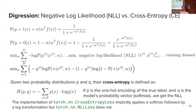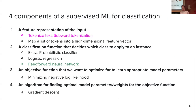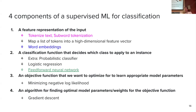This brings us to the end of feed-forward neural networks. We are still talking about supervised machine learning for text classification, learning more about each of four components. Last time we covered feed-forward neural networks as another classification function. Today we are going to enhance what we know about feature representation of the input — something better than the feature vectors you are implementing in your homeworks.